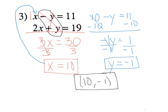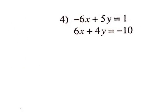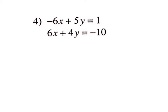Everything was all set up. If we look at the next problem to the right, you'd see the exact same thing. Automatically, you would notice that negative 6x plus 6x would cancel out. You would add straight down: this would be 9y equals negative 9, and then you would go ahead and solve. But the problem is this only works when everything's perfectly set up, where things automatically cancel out right away.